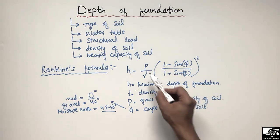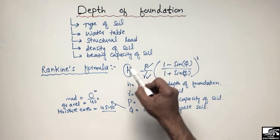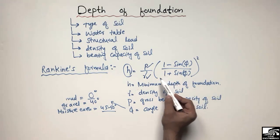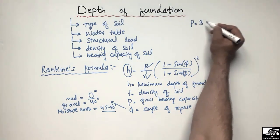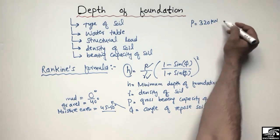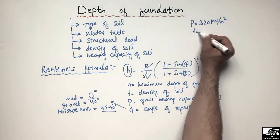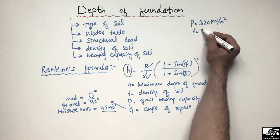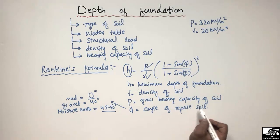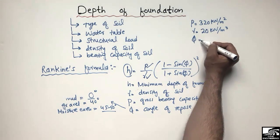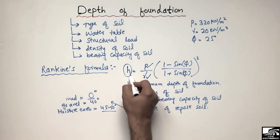By knowing all these factors — the gross bearing capacity, the density of soil, and the angle of repose — we can find out the minimum depth of foundation. Now let's solve a numerical example. Let's suppose that p, the gross bearing capacity of soil, is 320 kilonewtons per square meter, gamma the density of soil is 20 kilonewtons per cubic meter, and phi is 25 degrees.